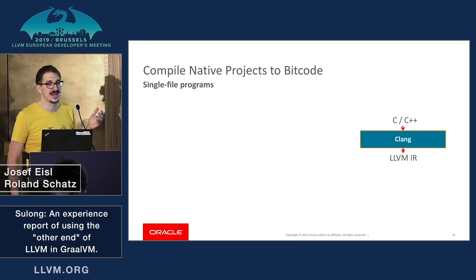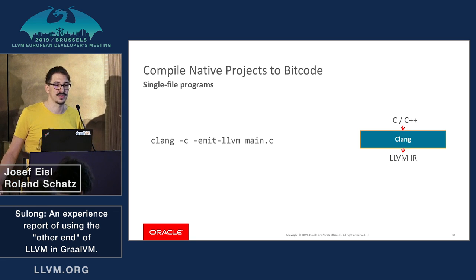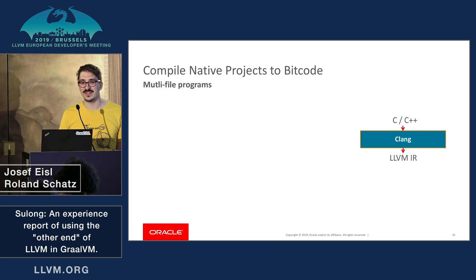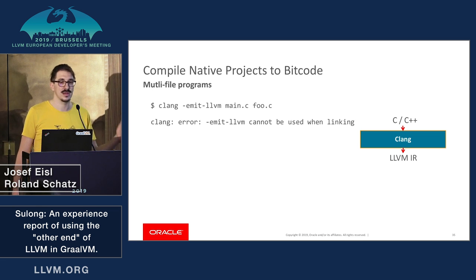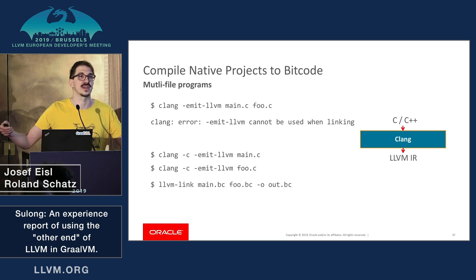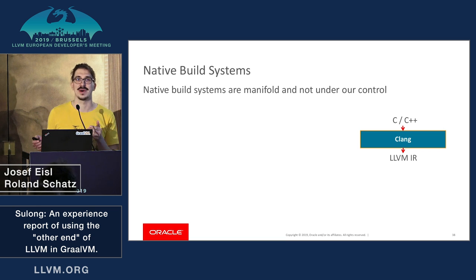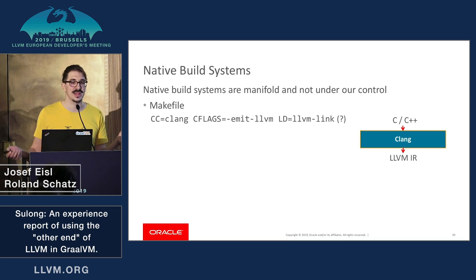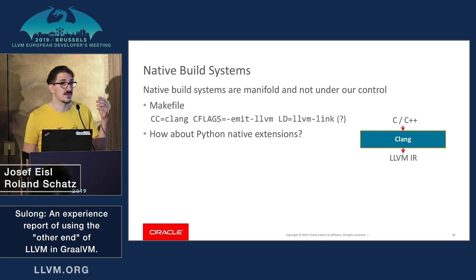For single-file programs this is not an issue — we just use Clang with emit-LLVM and get bitcode. But the picture changes with multiple files. If you try to compile them at once, Clang will say emit-LLVM is not supported when linking. You can do separate compilation and use llvm-link to get the final bitcode executable. But we're dealing with all kinds of different build systems that we usually don't control. For make, setting some environment variables might work, but linking probably won't. And it gets even worse for language extensions — Python has its own way of specifying how to build a native project, and packages like NumPy actually pass object files and inspect the compilation output to find out how long double is laid out in memory.